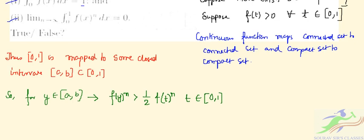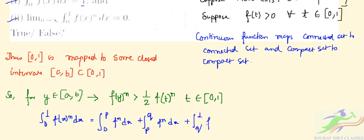Now let us use condition number 1. We have integral from 0 to 1 of f(x)^n dx. We can write this as integral from 0 to p of f^n dx plus integral from p to q of f^n dx plus integral from q to 1 of f^n dx, which equals the integral from p to q of f(x)^n dx.